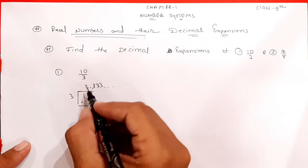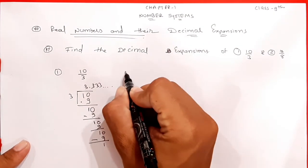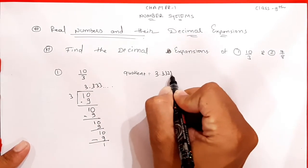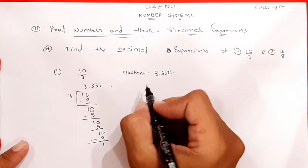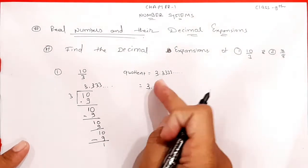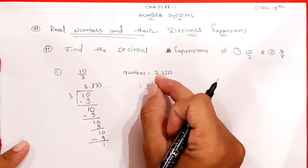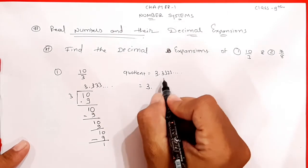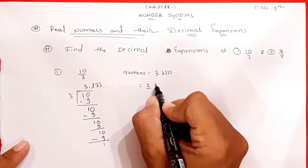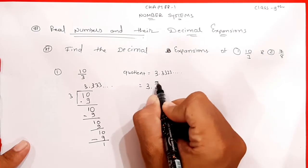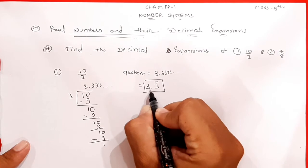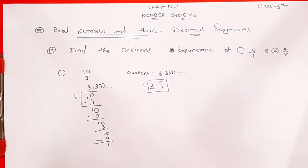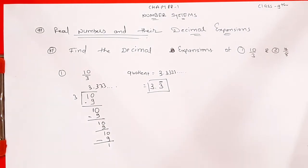Toh students, quotient kya mila? 3.33333... dash dash — chalta hi raha. Isko hum kaise represent kar sakte hain? Point ke baad jo decimal expand ho raha hai, wahi ek hi number — 3 — repeat hota ja raha hai. 3 ke upar bar lagaate hain. Toh answer hai 3 point 3 bar.